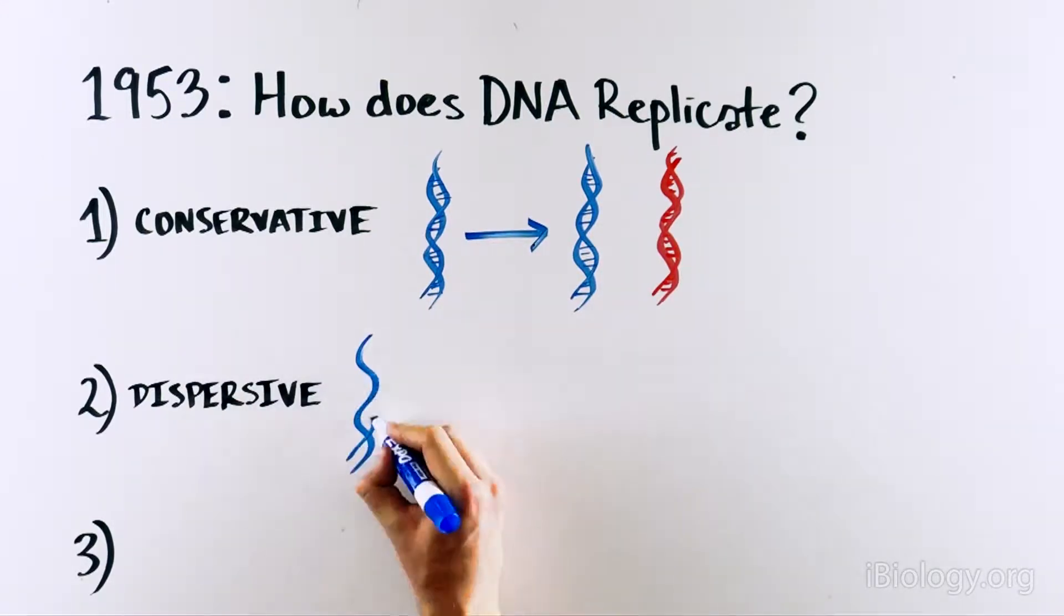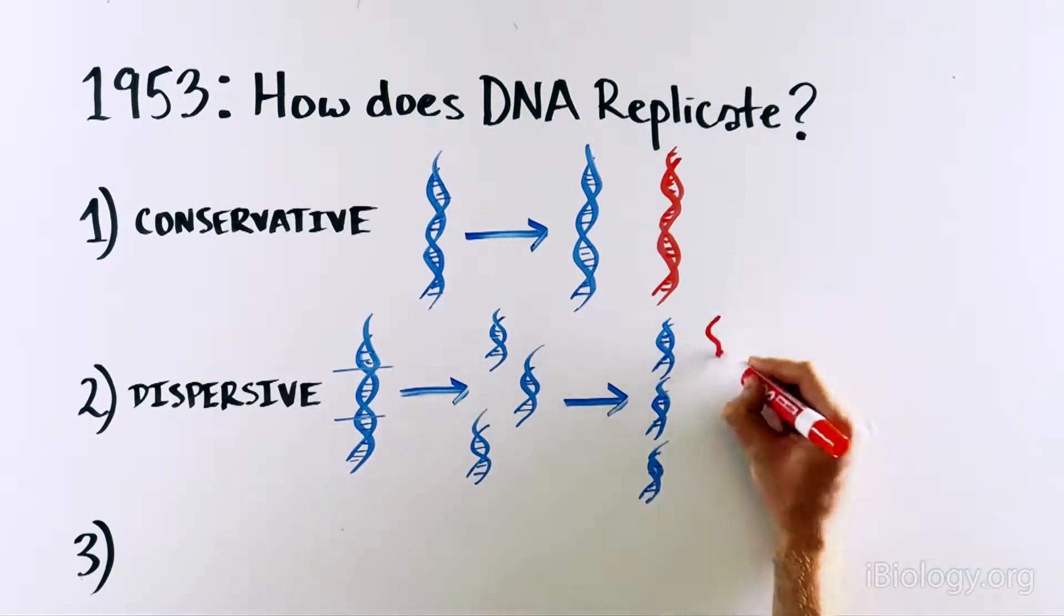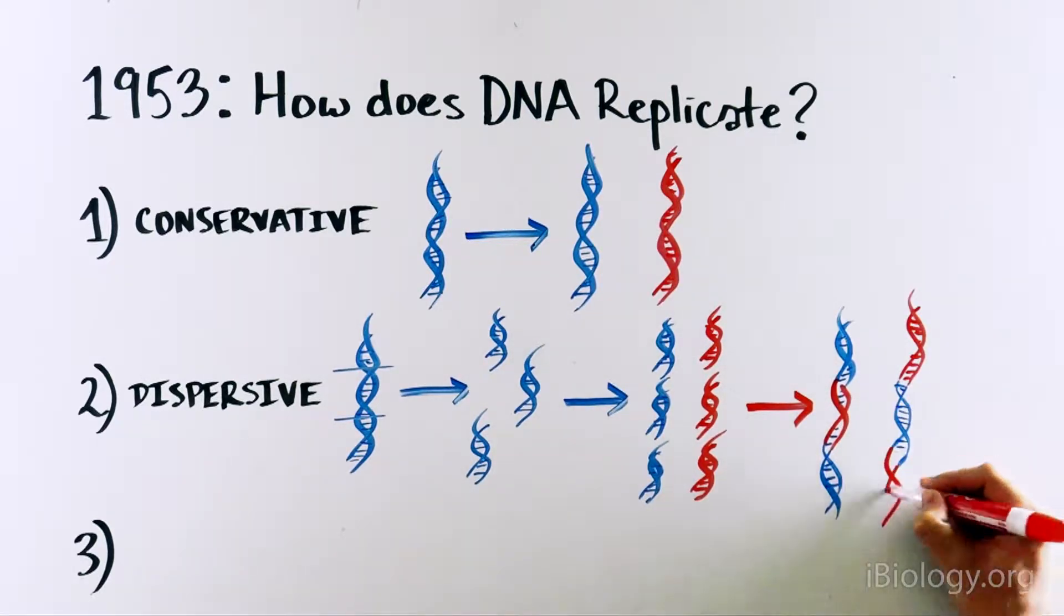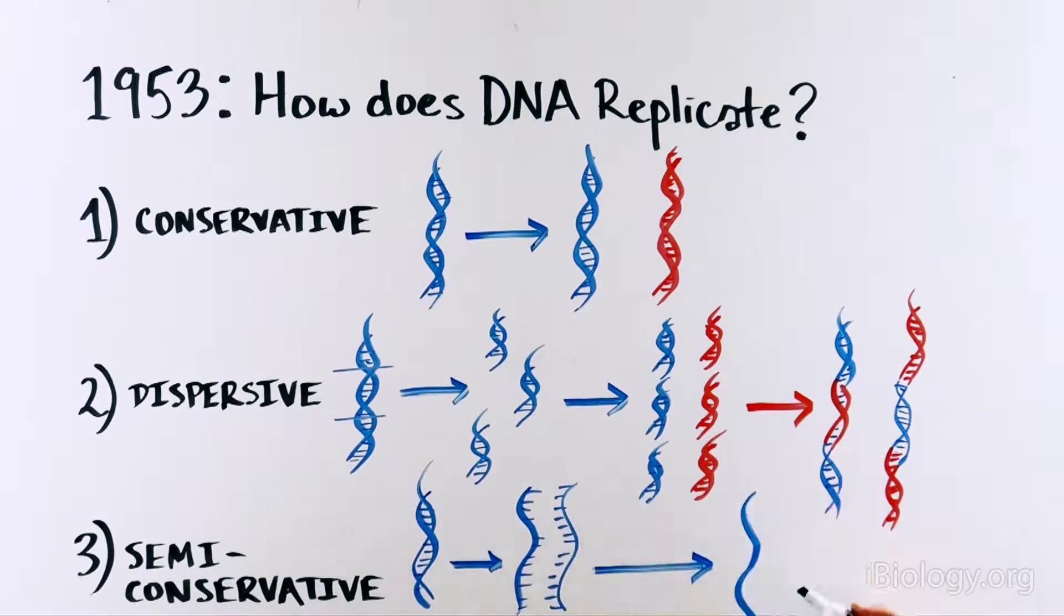The second was dispersive, where the DNA molecule would be cut at various parts, each of which would get copied here in red and reattached to produce two DNA molecules. And the third was semi-conservative, where two DNA strands would separate and each one would serve as a template to copy a second red strand, thus producing two DNA molecules.